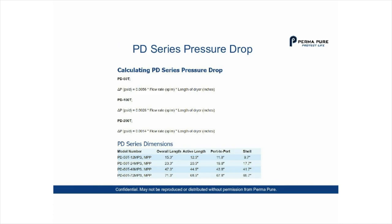Here's a graph showing how to calculate the PD series pressure drop. The simple calculation is: pressure drop in PSI equals 0.0056 times the flow rate times the length of the dryer. These values change depending on the number of tubes.